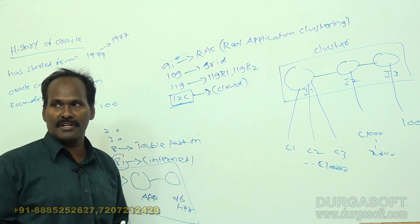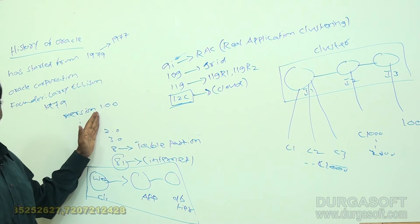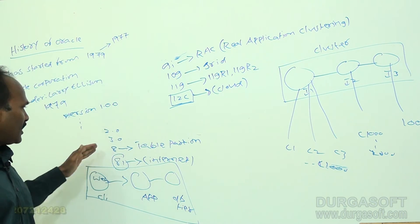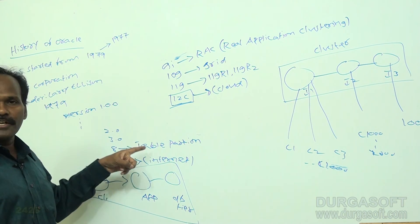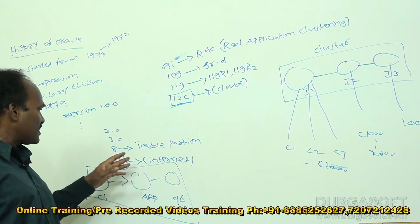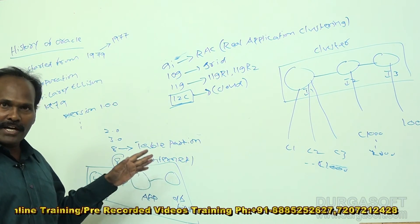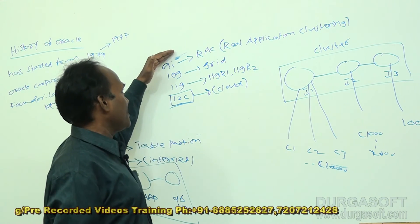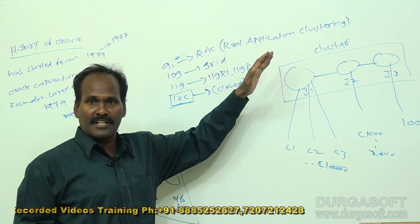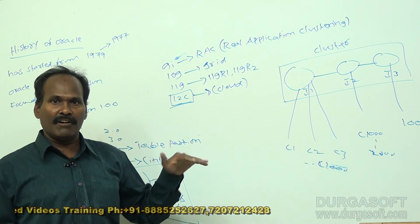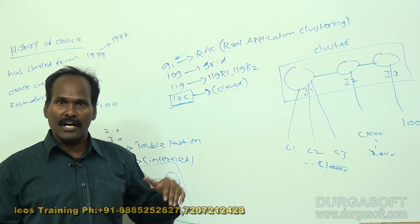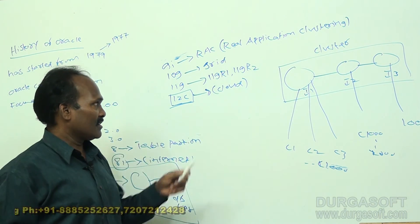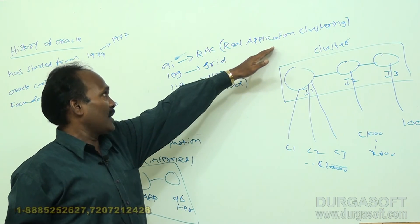This is the history of Oracle. Oracle version history started from version 1.0, 2.0, up to 8i — it had not attracted much attention. From 8i onwards, with internet features, deploying Oracle in multi-tier architecture became possible. Oracle 9i introduced Real Application Clustering, allowing multiple instances so that a failed instance's workload is handed over to the next surviving instance.